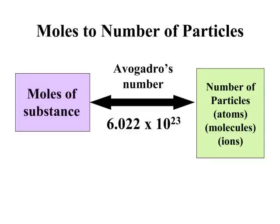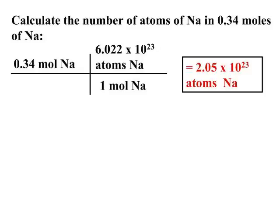At this point, you simply want to be able to work simple problems that allow you to convert moles of a substance to the number of particles — those particles being atoms, molecules, or ions. The only conversion factor that allows you to move from moles of substance to particles is Avogadro's number. In converting from moles to particles or particles to moles, that is your conversion factor.